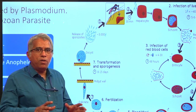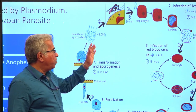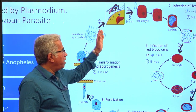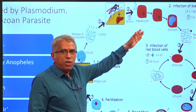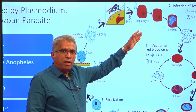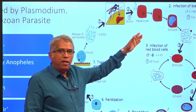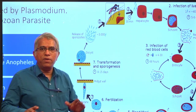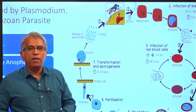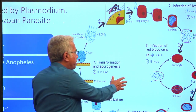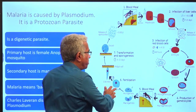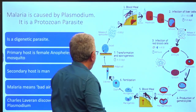This is how the sporozoites will reach another human again through the process of inoculation. This completes the life cycle. Now let us come to the symptoms of malaria.